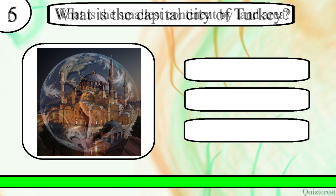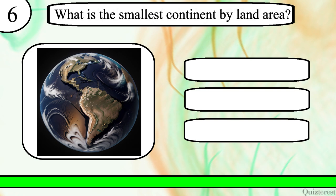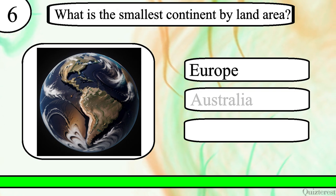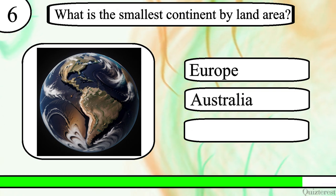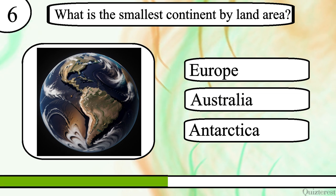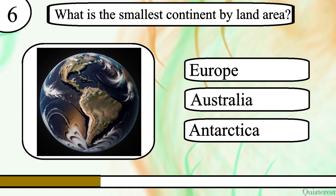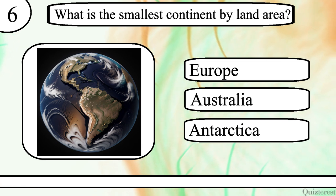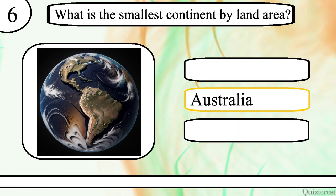Question 6. What is the smallest continent by land area? Europe, Australia or Antarctica? The correct answer is Australia.